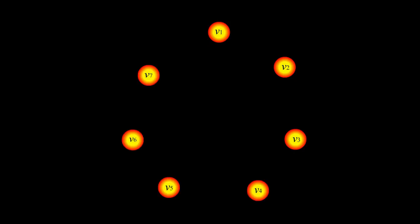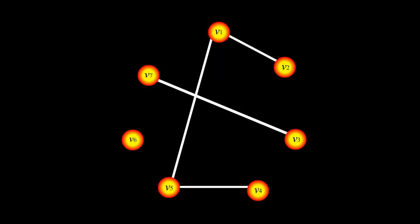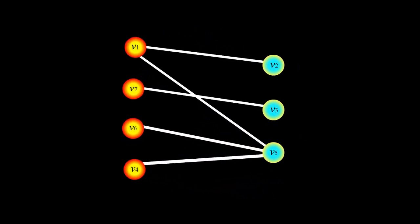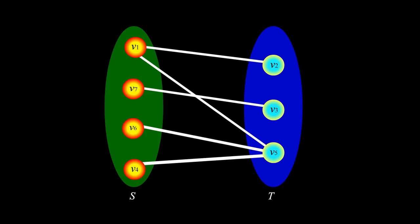For example, this graph — here are the vertices and here are the edges. This graph can be redrawn so that you see the vertices can be partitioned into two subsets: S on the left and T on the right, and each edge has one endpoint in S and another in T. So this graph is a bipartite graph.